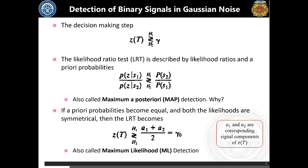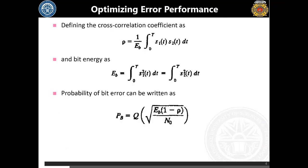The two types of detectors are: first, the maximum a posteriori (MAP) detector, whose expression is given, and second, the maximum likelihood (ML) detector. The ML detector is a specific case of MAP detection when the a priori probabilities are equal. The maximum likelihood detector is the most widely used detector in digital communications.